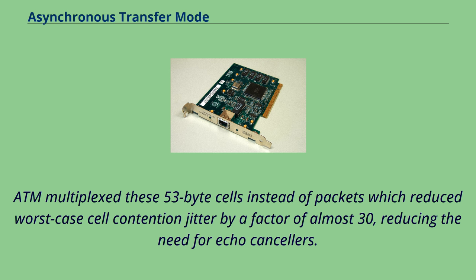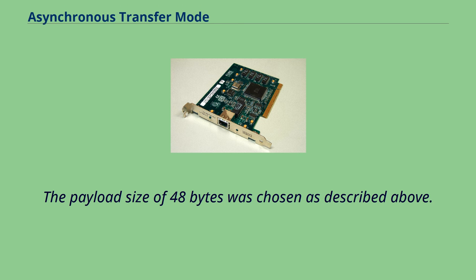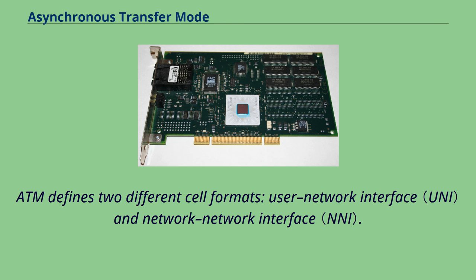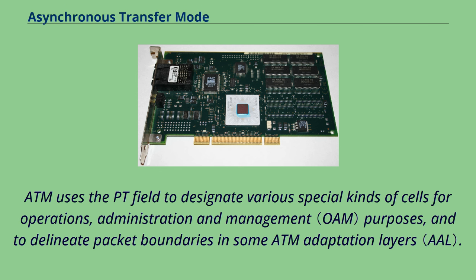An ATM cell consists of a 5-byte header and a 48-byte payload. ATM defines two different cell formats: user-network interface (UNI) and network-network interface (NNI). Most ATM links use the UNI cell format. ATM uses the PTI field to designate various special kinds of cells for operations, administration, and management purposes, and to delineate packet boundaries in some ATM adaptation layers.